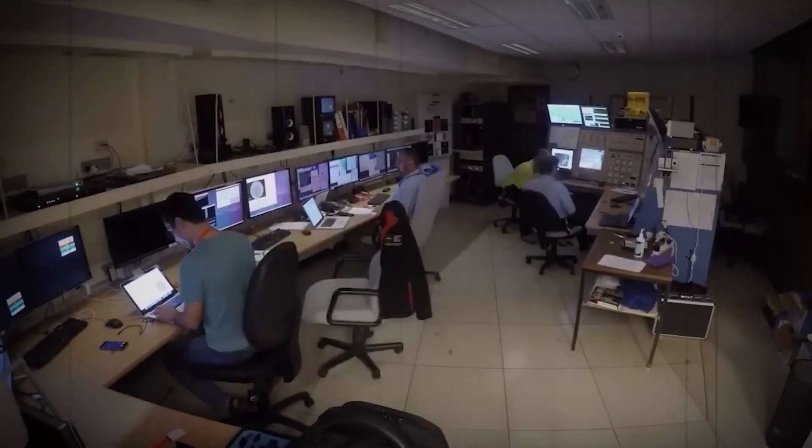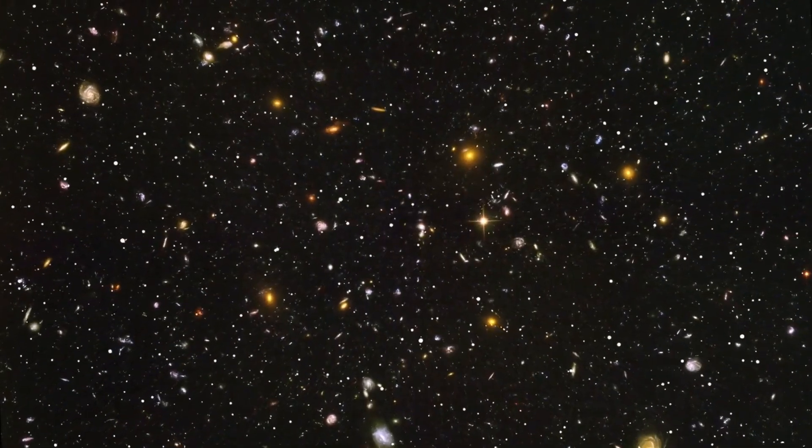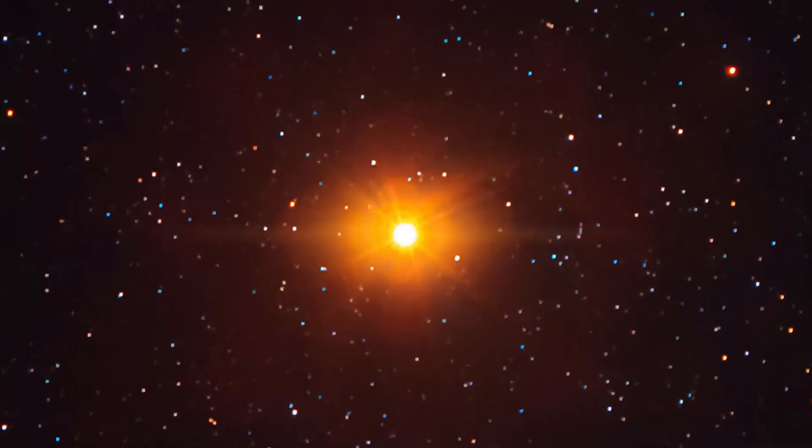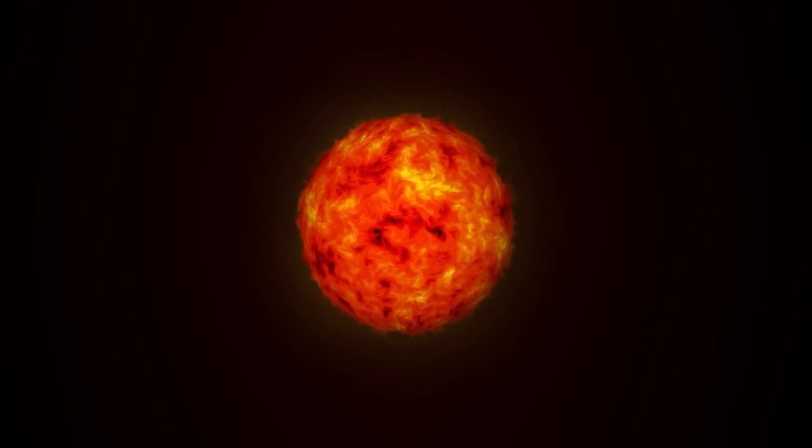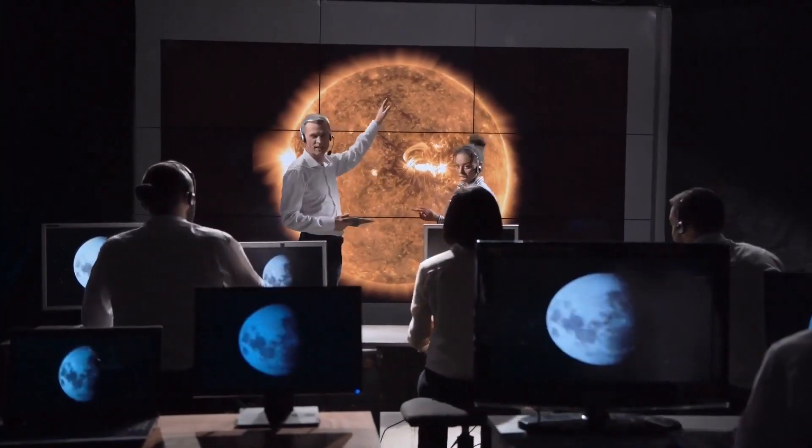The burst of a supernova starts a process called nucleosynthesis, which makes heavy elements like iron, nickel, and gold. The extreme heat and pressure of the explosion make these elements. They are then sent into space, where they help make new planets and stars.